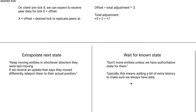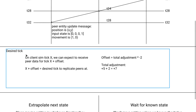The other option is the conservative approach: wait for known state. You'd add a little extra latency — buffering more data — to ensure you have messages to process. If you ran out of data, you simply wouldn't move the entities. You'd reduce how often you run out by pushing your desired TIC a little farther back into the past, which means buffering more messages.